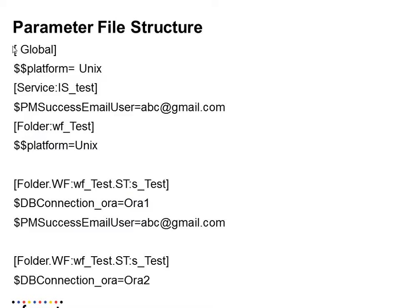The parameter file can have a global section — parameters defined there are visible to all workflows using that file. You can also define parameters at the service level, folder level, workflow level, or session level. If the same parameter is defined in both the global section and at the session level, the session-level value takes precedence.